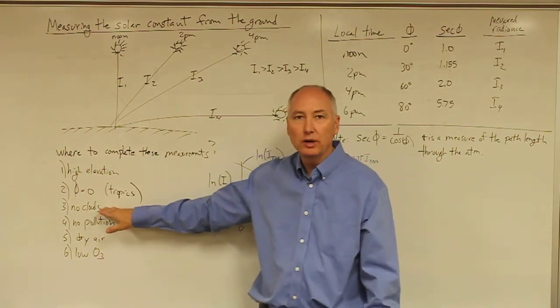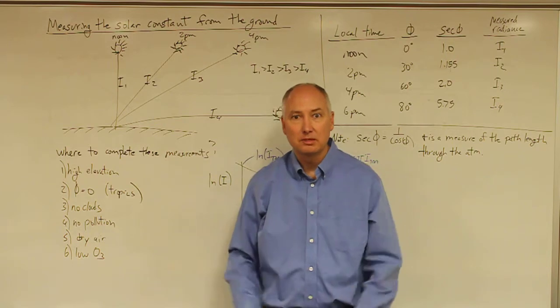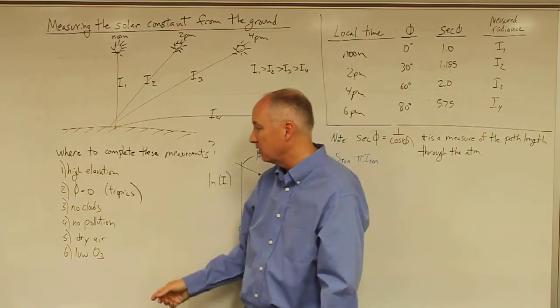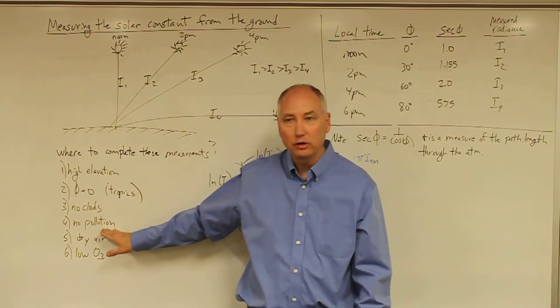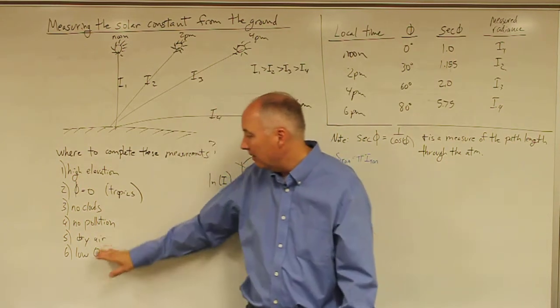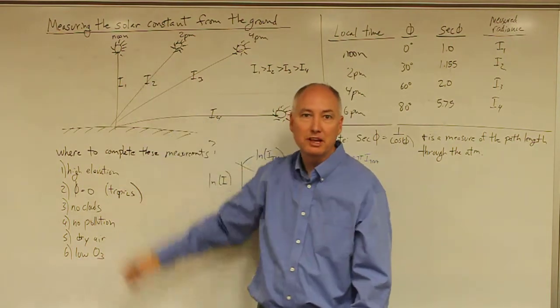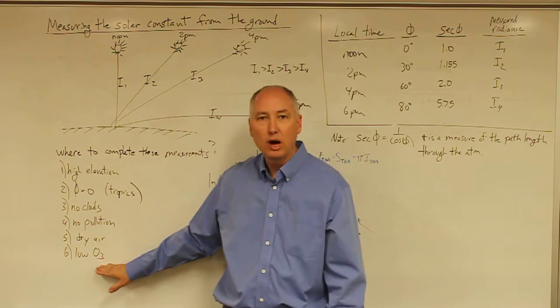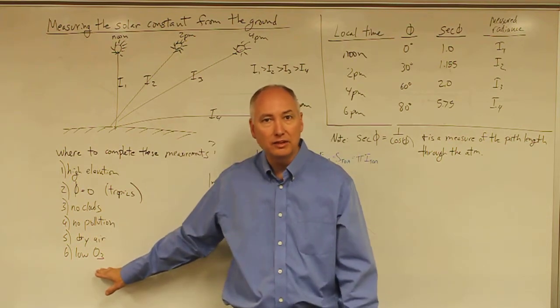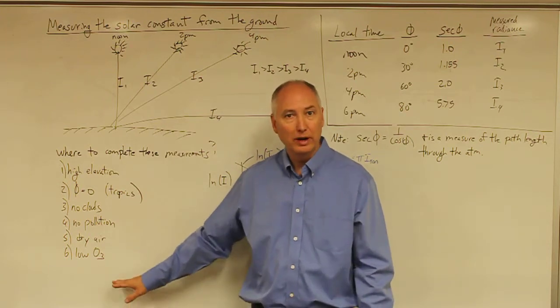You obviously don't want any clouds throughout the entire day, because clouds will scatter some of that radiation, preventing it from getting to the surface. You don't want to have any air pollution in the air that will either scatter or absorb that solar radiation. You want to have dry air so that there's not much water vapor to absorb the infrared component of the solar radiation. And you want to have low ozone concentrations in the stratosphere, because you don't want that ozone absorbing the solar radiation either.